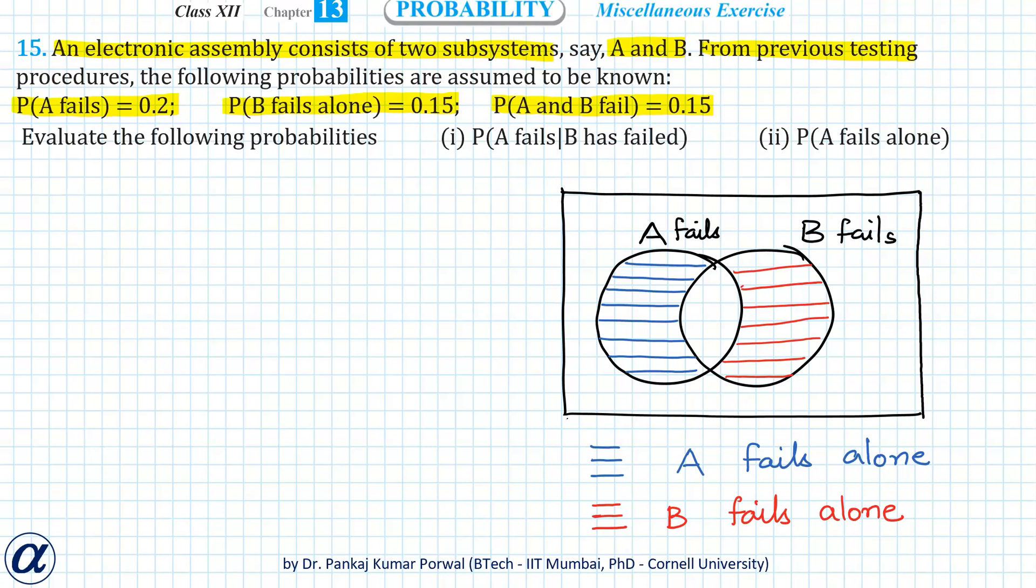Here, first let us understand the difference between event A fails and A fails alone. Event A fails is denoted by the circle on the left. The part of the circle which is common with B, that is the intersection of A fails and B fails, denotes failure of A and B.